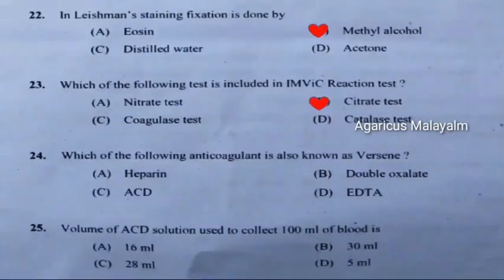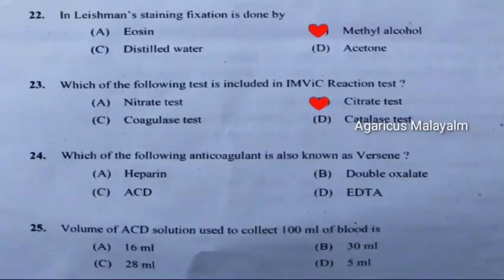Twenty-fourth question: Which of the following anticoagulants is known as Versene? Correct answer is Option D: EDTA.